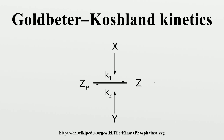Assuming that the total concentration of Z is constant, we can additionally write that Z0 equals Zp plus Z. Solving the quadratic equation for Z, we obtain a solution to the initial equilibrium problem. This describes the equilibrium concentration of Z and Zp as a function of the kinetic parameters of the phosphorylation and dephosphorylation reactions and the concentrations of the kinase and phosphatase. The solution is the Goldbeter-Koshland function.